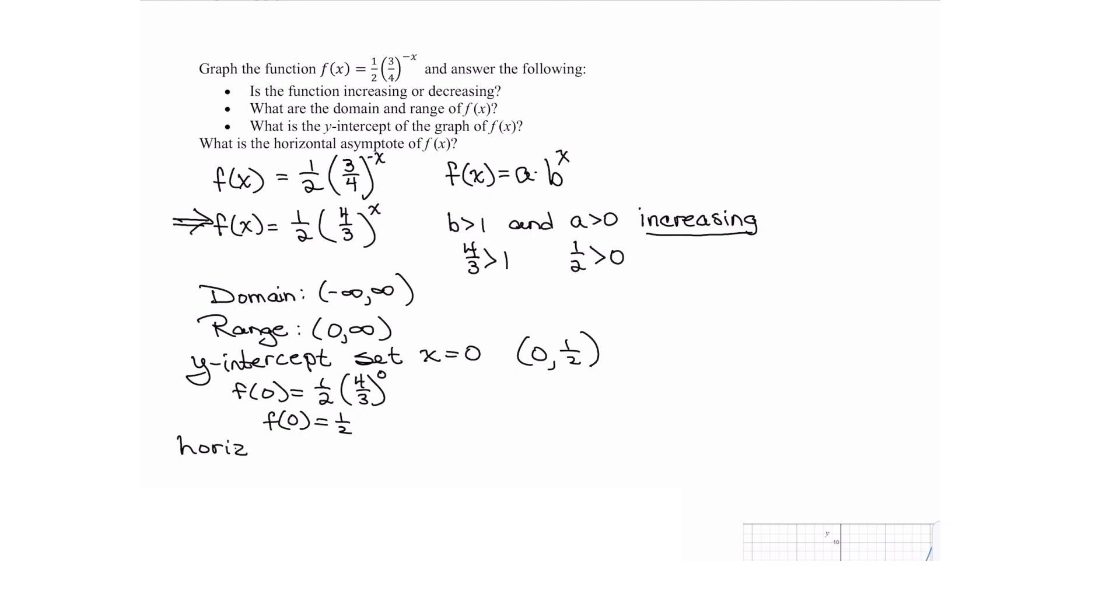And then what's the horizontal asymptote of the function? Well the horizontal asymptote is y equals 0. And that'll be true for any non-shifted, vertically shifted exponential function. And those sorts of functions if they've been shifted vertically will be in the next tutorial. So here we have our horizontal asymptote y equals 0.